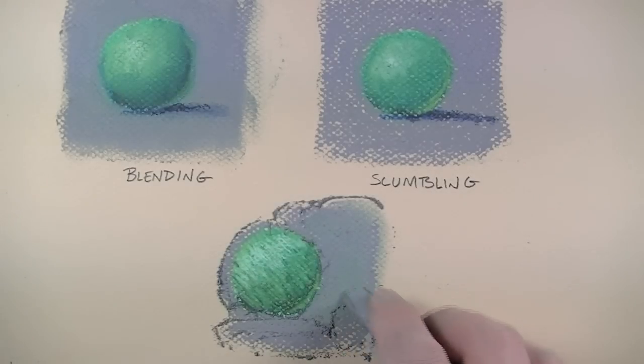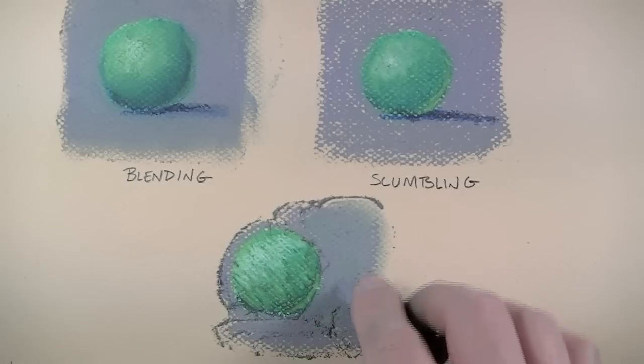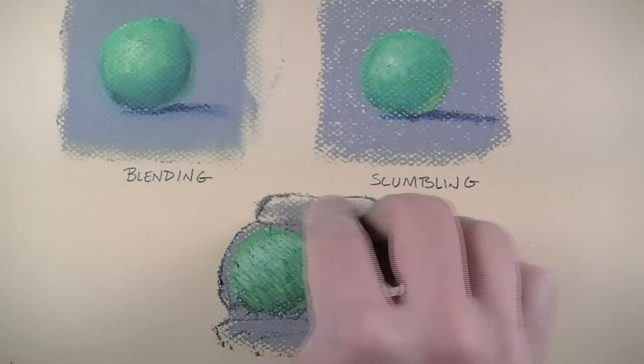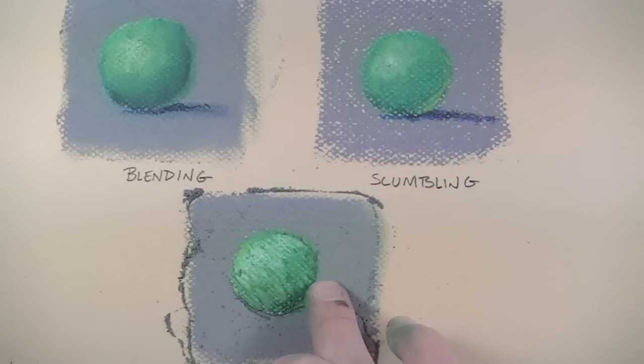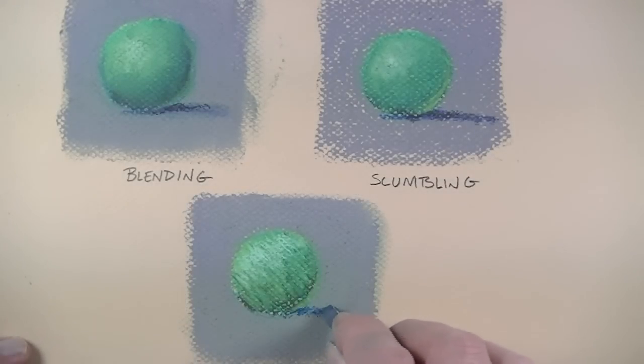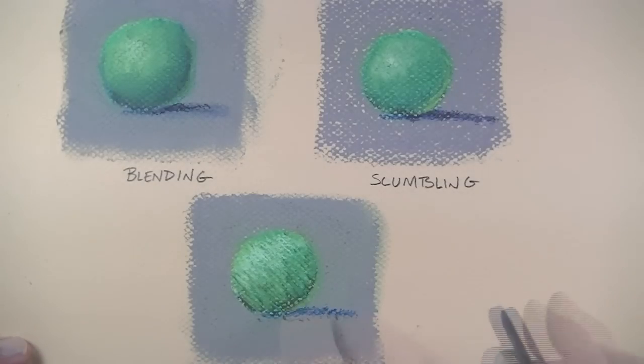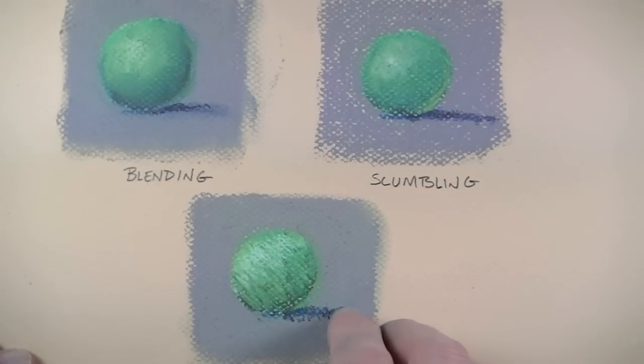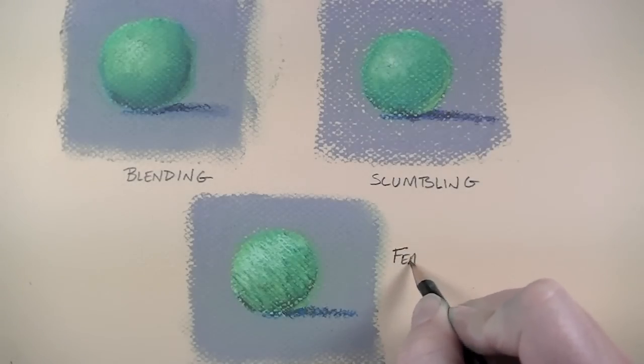In this case I will blend in the background. With the background defined I can go back and add a bit of cast shadow using a blue first followed by a dark brown. Again, this technique is referred to as feathering.